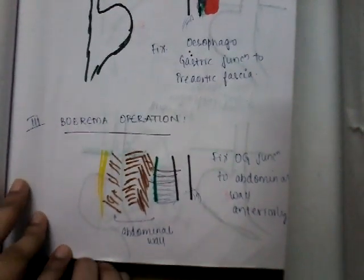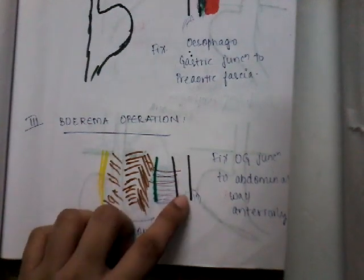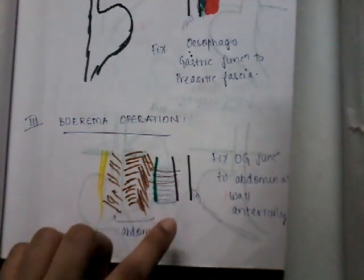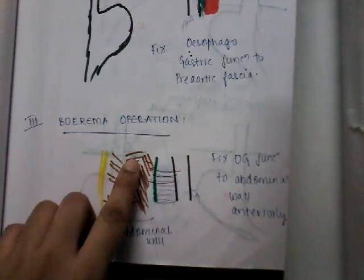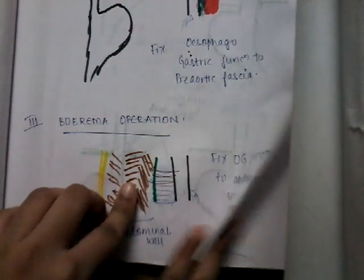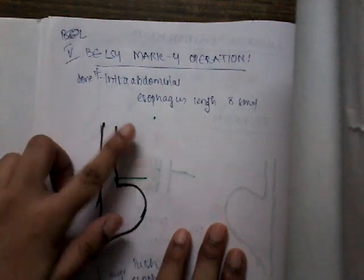The next operation is Boerema's operation, in which the gastroesophageal junction is fixed to the anterior abdominal wall. That is Boerema's operation.